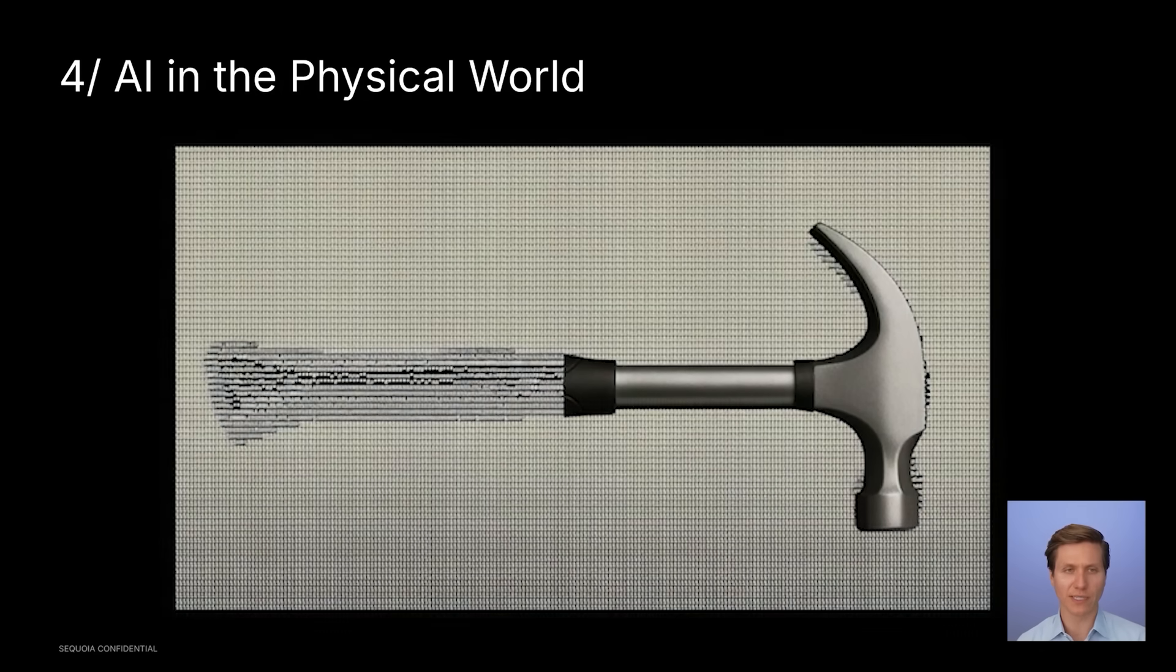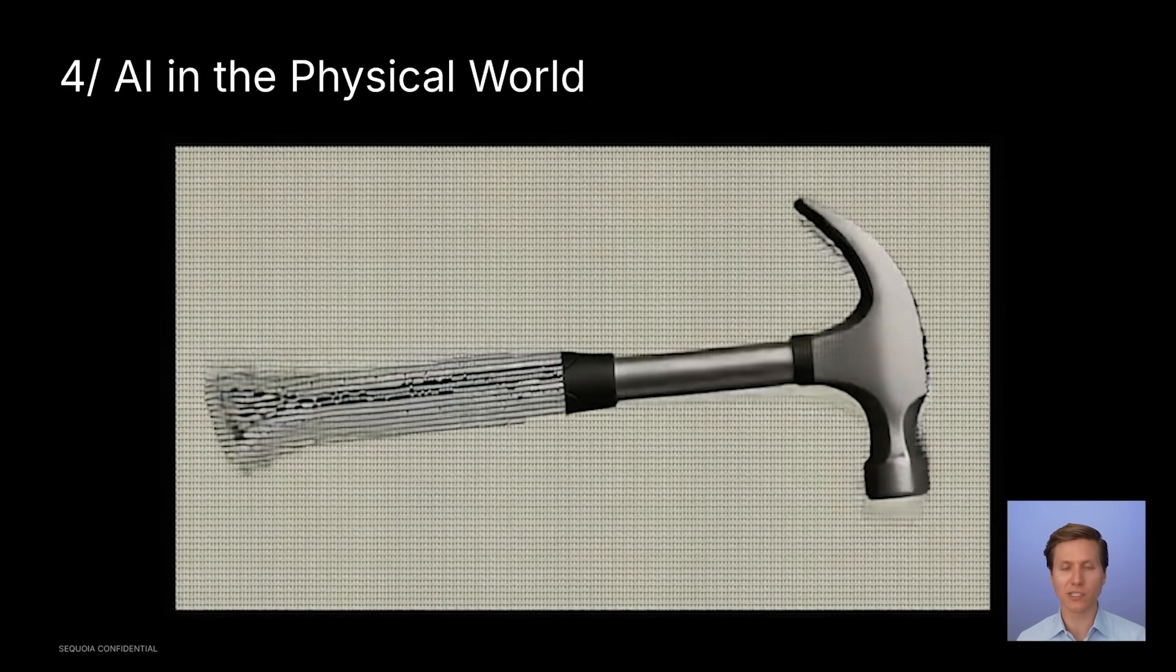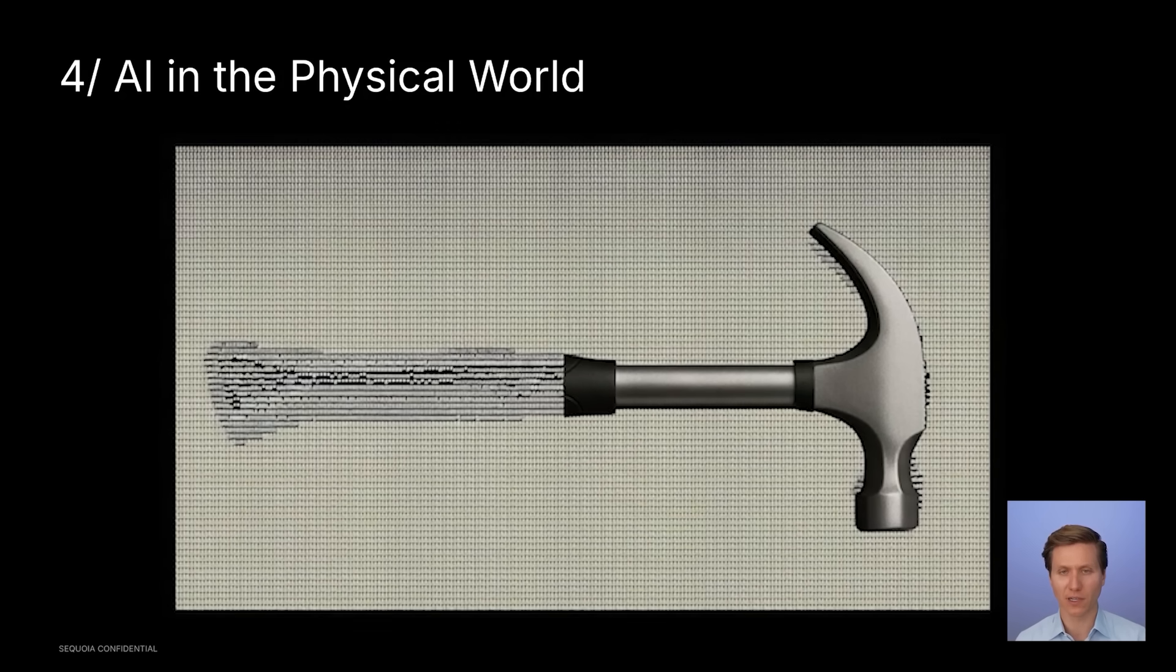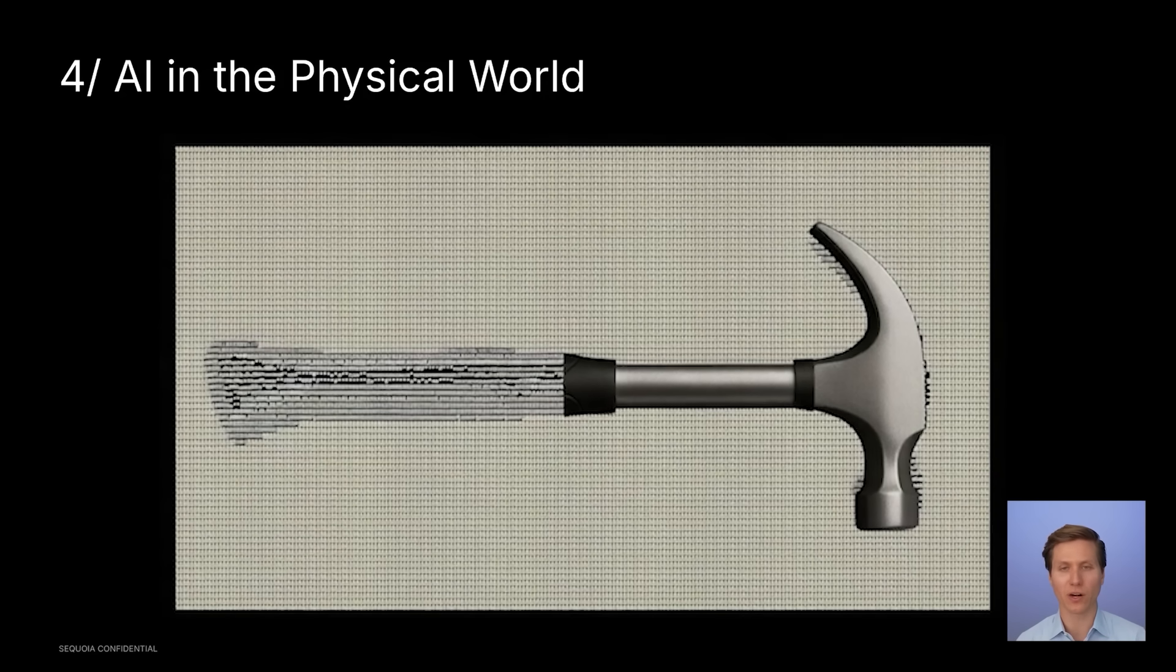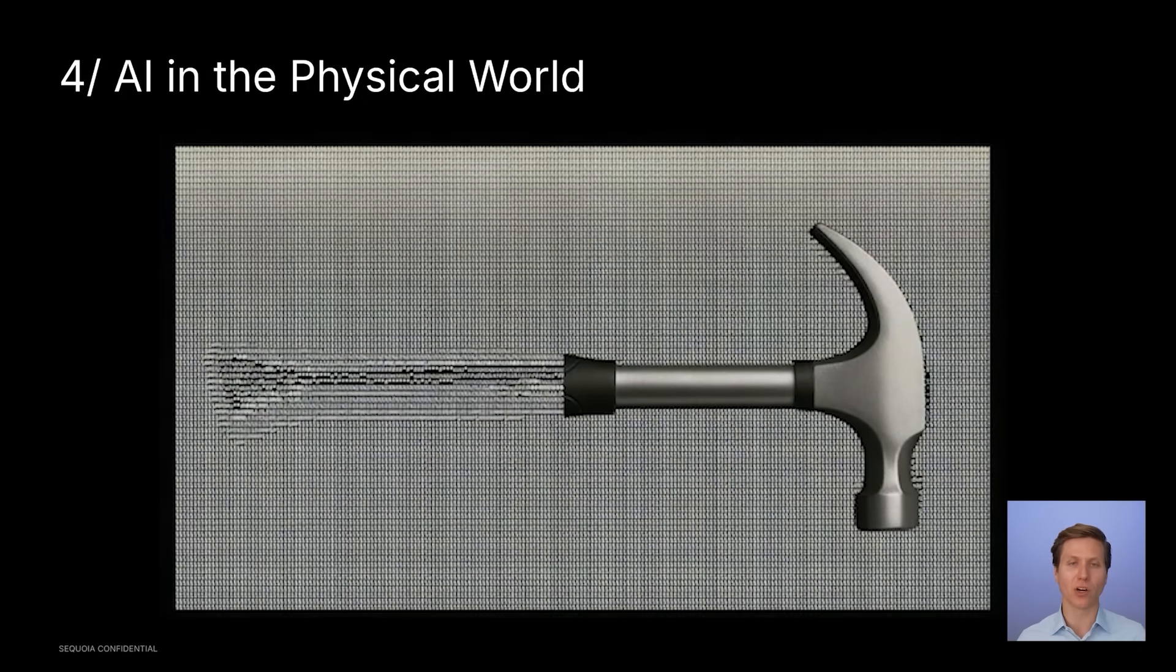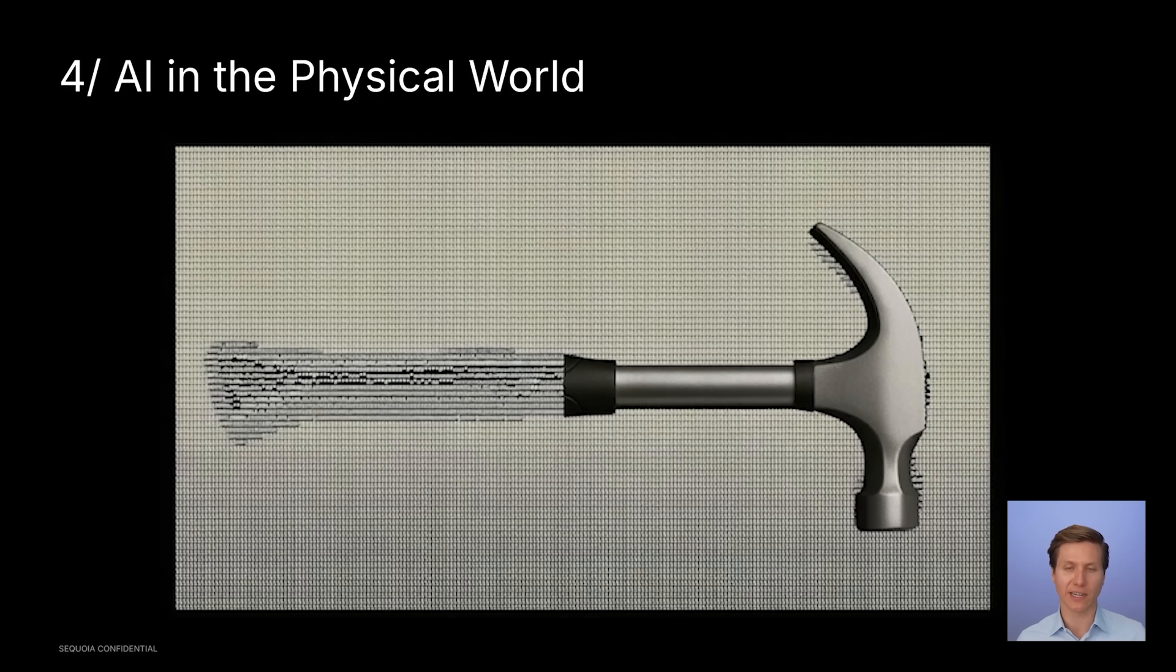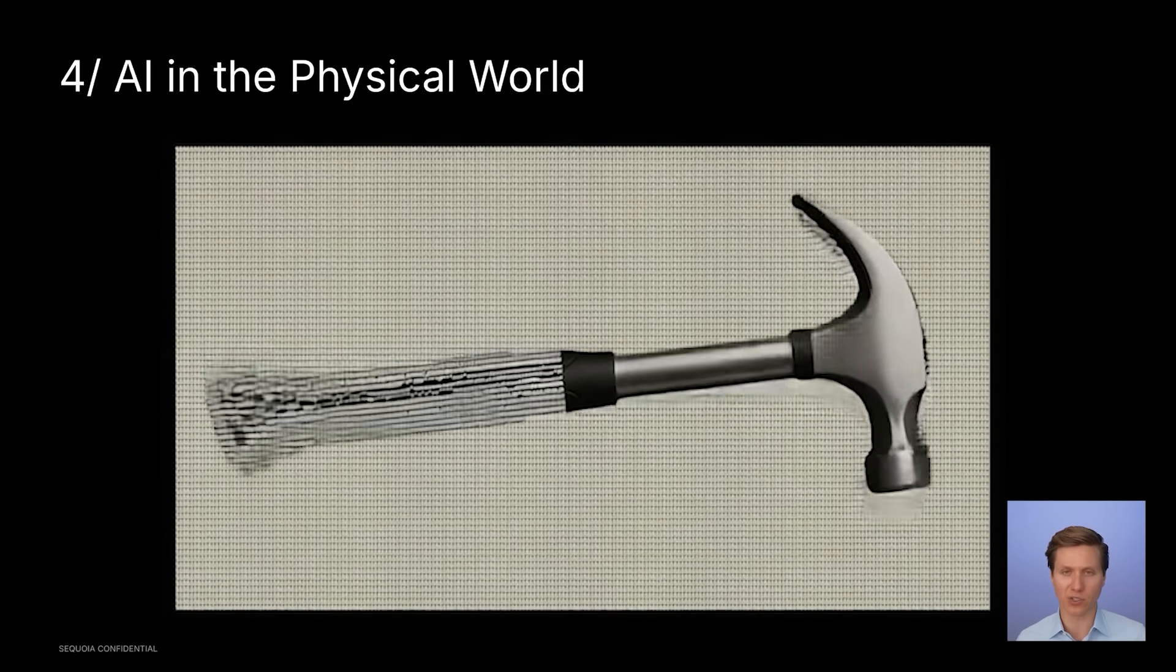A fourth trend we've noticed is AI in the physical world. It's really coming to life, and this isn't just humanoid robotics. It also is creating processes and creating hardware with artificial intelligence. Consider Nominal, which uses artificial intelligence to accelerate the hardware manufacturing process and actually also uses artificial intelligence to do the quality assurance after it's deployed in the field.